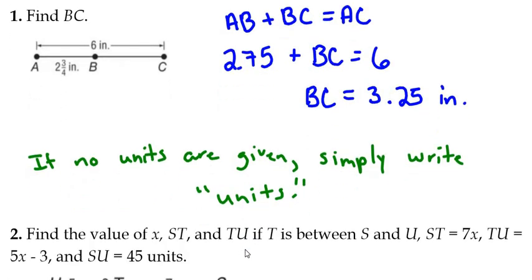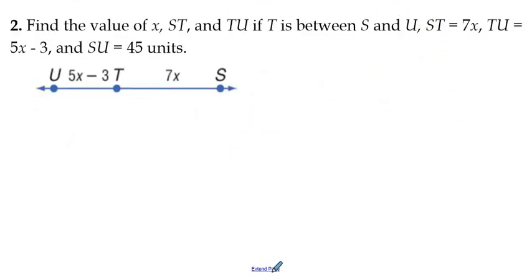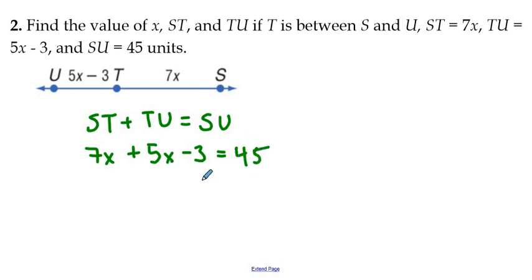Second example here. Find the value of X, ST, and TU. If T is between S and U, ST equals 7X, TU is 5X minus 3, and SU is 45 units. So we'll start by writing the segment addition postulate. ST plus TU equals SU. ST is 7X units. TU is 5X minus 3 units. And SU is given in the problem to be 45 units.